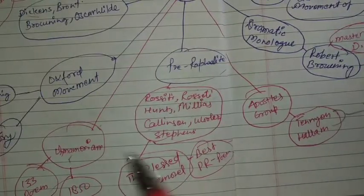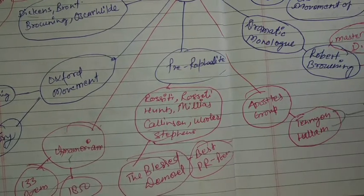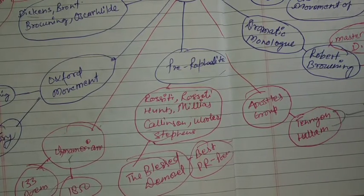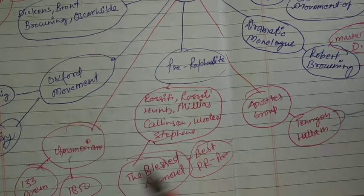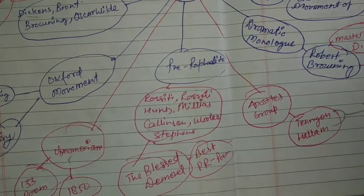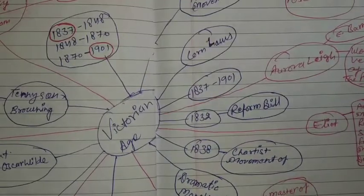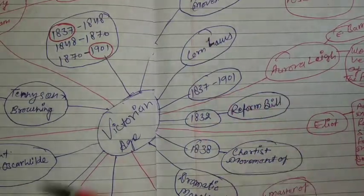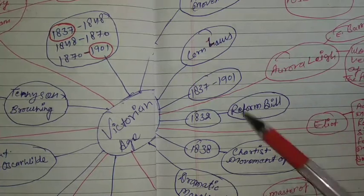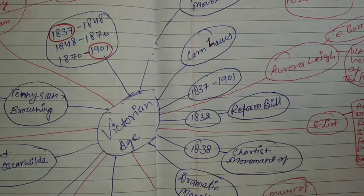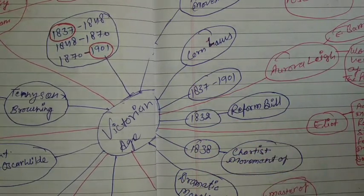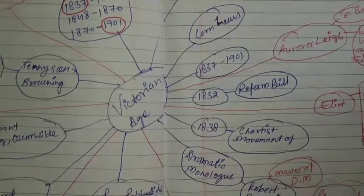In Memoriam by Tennyson contained 133 poems, and its publication date was 1850. You can make a presentation for yourself so that you can discuss and visualize these things, helping you remember lots of things about Victorian age.